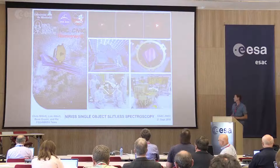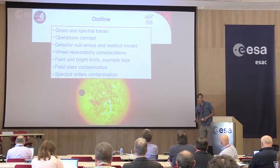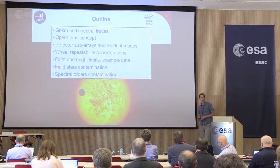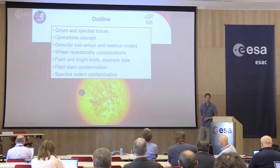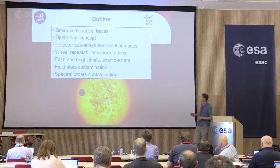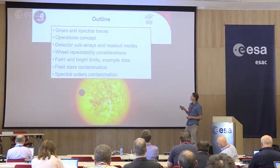I'm back to talk about NIRISS Single Object Slitless Spectroscopy mode. This is similar to the Bright Object Time Series that Stefan was just talking about. The main use of this mode is going to be for transit and eclipse of exoplanets where you're getting time-resolved spectroscopy of the star system, such as in this picture here.